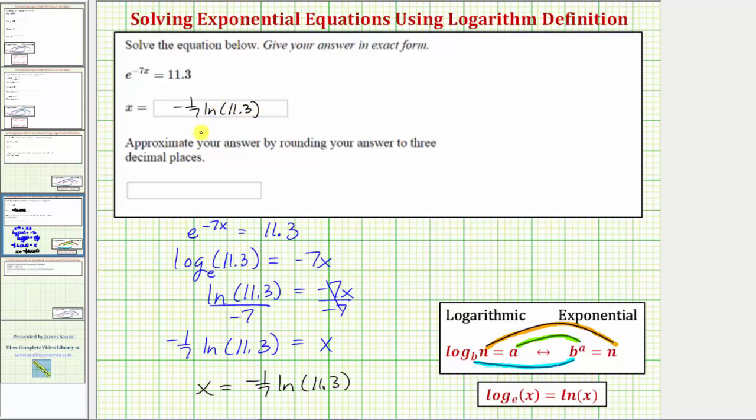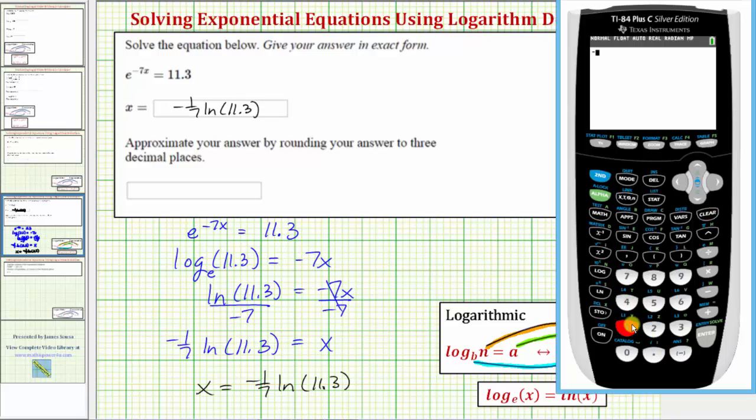And now let's round this value to three decimal places. So using the calculator, we'll enter negative one divided by seven, natural log 11.3. To three decimal places, our solution is approximately negative 0.346.